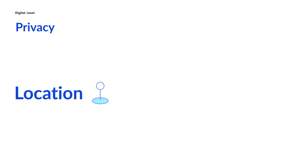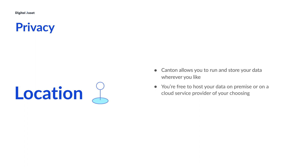As a distributed system, Canton allows you to run and store your data wherever you like. You're not required to use someone else's system like in common software-as-a-service models. You're free to host your data on-premise or on a cloud service provider of your choosing, and moving data between those spaces doesn't affect your ability to connect with other applications. So you have complete control over the privacy and security location of your data.